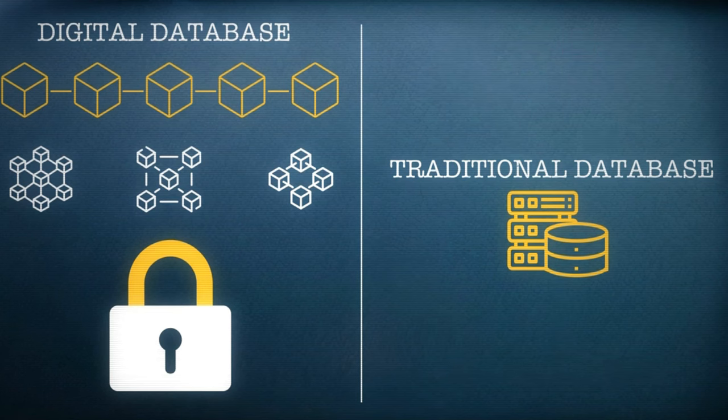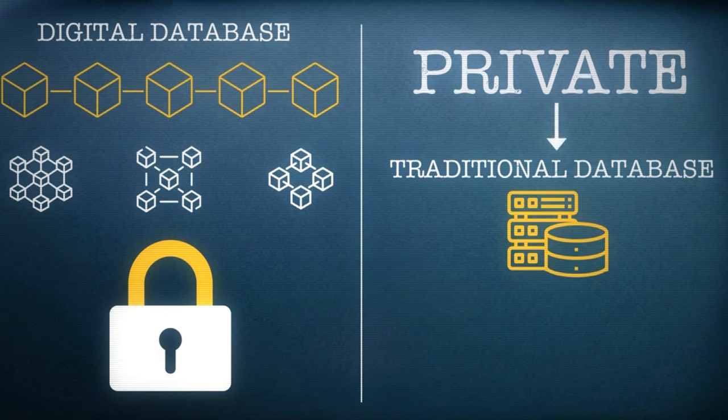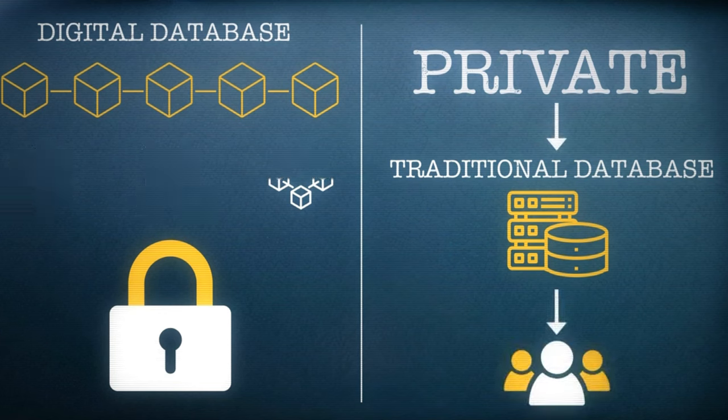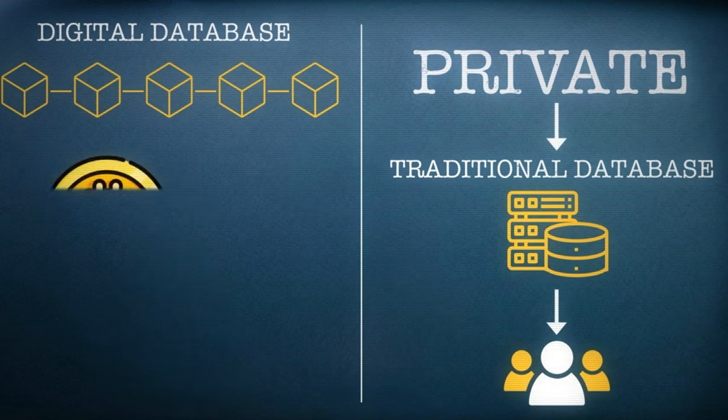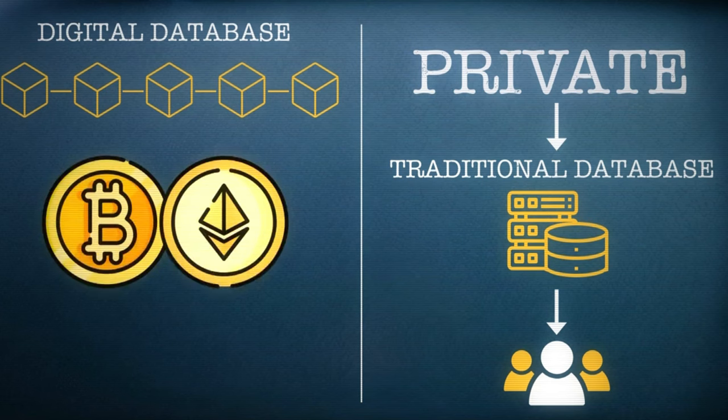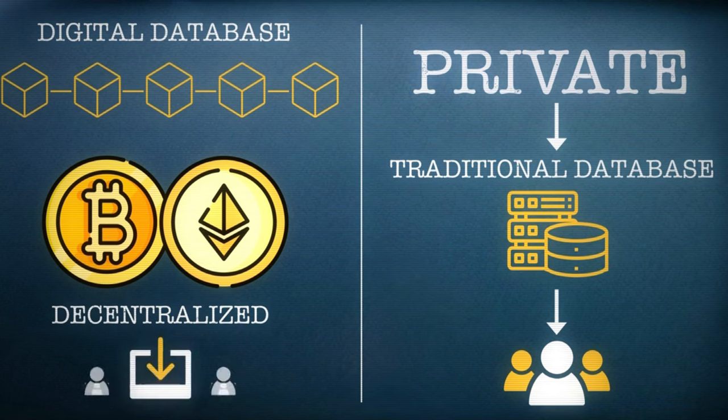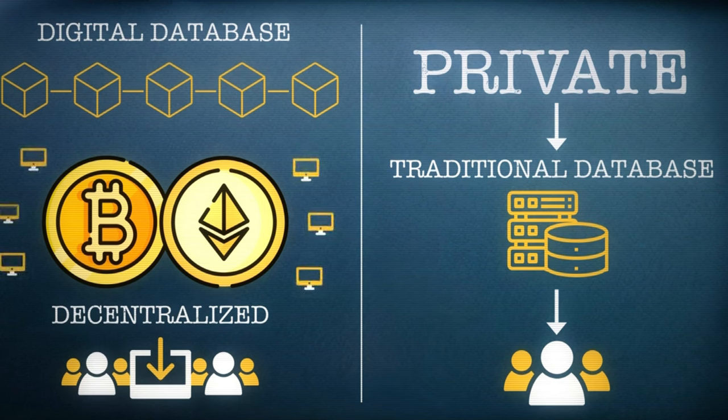Traditional databases can also be private, meaning they can only be viewed by a small number of people. By comparison, the Bitcoin and Ethereum blockchains are completely decentralized, allowing anyone to download a copy of the database for themselves. Because these blockchains are distributed across thousands of computers around the world, the networks are much more difficult to take down.